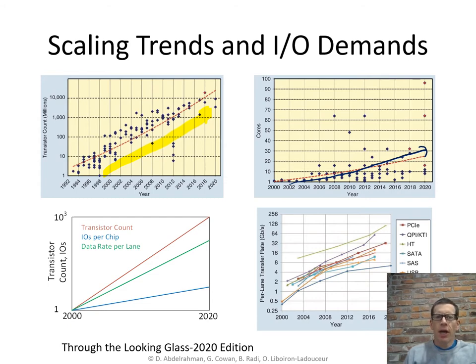The figure on the bottom left shows a stylized view of transistor count going up in red. It's the steep curve and then what we see is that the number of I/Os per chip is going up much less quickly than the transistor count and so I'm using transistor count as a proxy for thirst for data. So if the number of ports is going up much more slowly it means that the data rate per lane has to go up almost as fast as the transistor count.